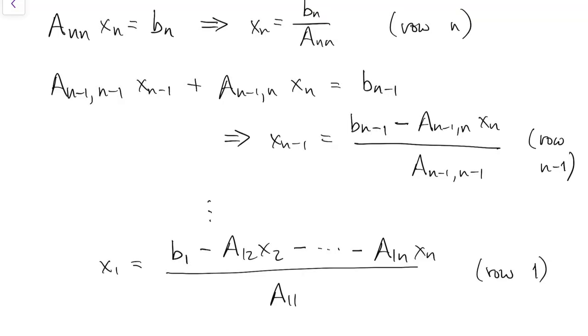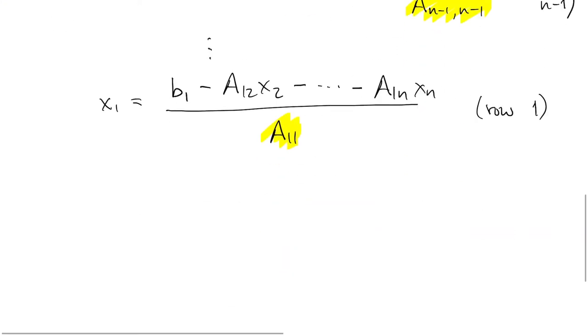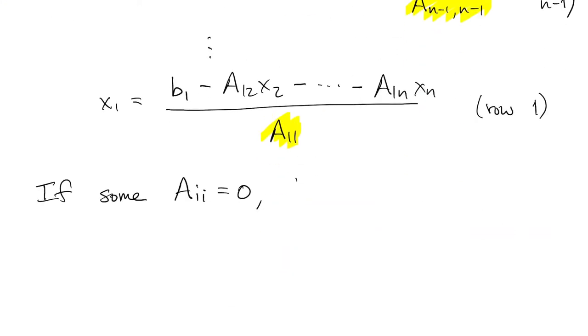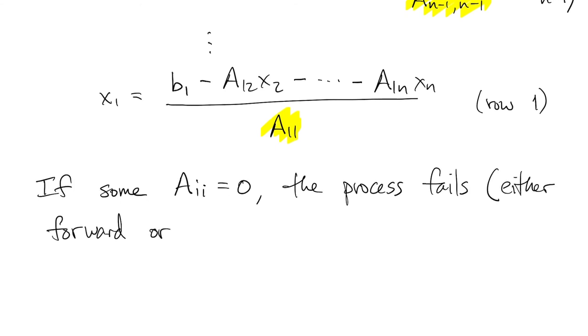One important thing about both types of substitution is that you'll notice that in the denominators, we have all the different diagonal elements of A, and if one of those were to be zero, this process breaks down. There's no way to continue. That sounds bad...